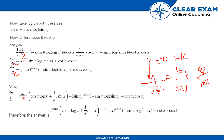Substituting in this equation, we get dy by dx equals x to the power sine x, whole into cos x log x plus 1 by x sine x, plus sine x to the power cos x, whole into minus sine x log sine x plus cos x into cot x. This is the final answer. Thank you.